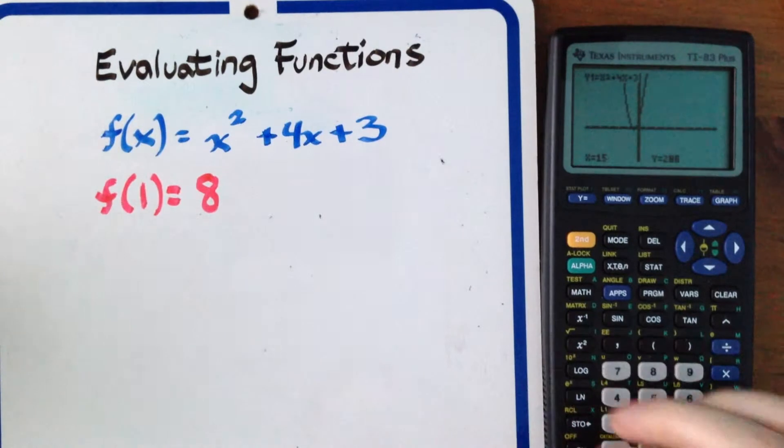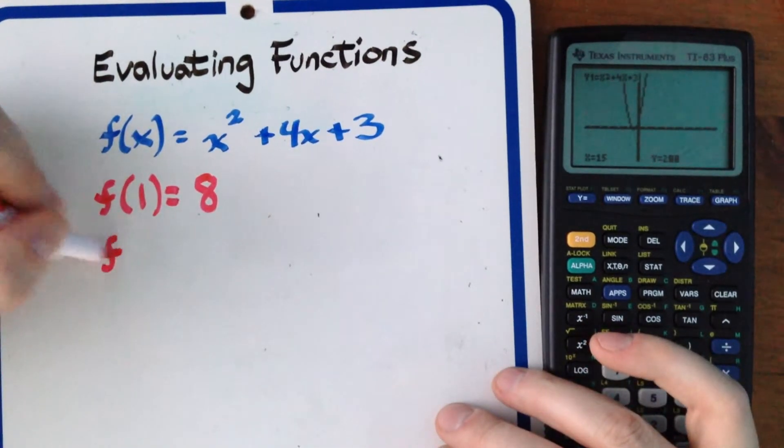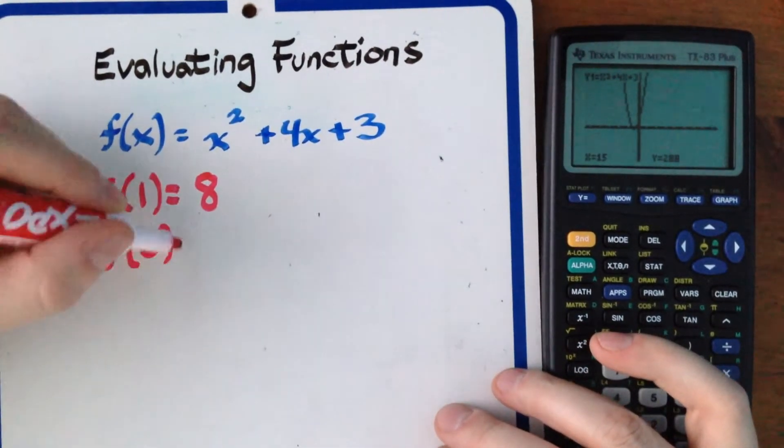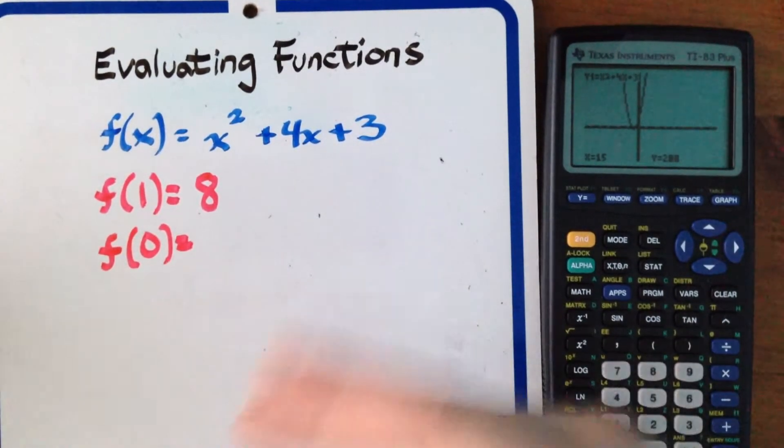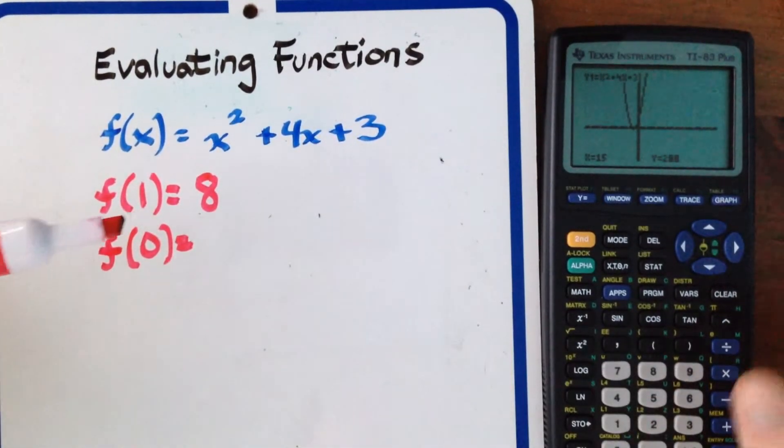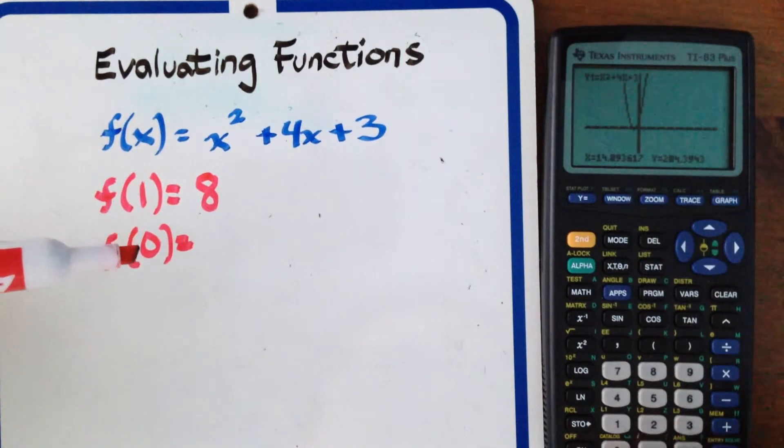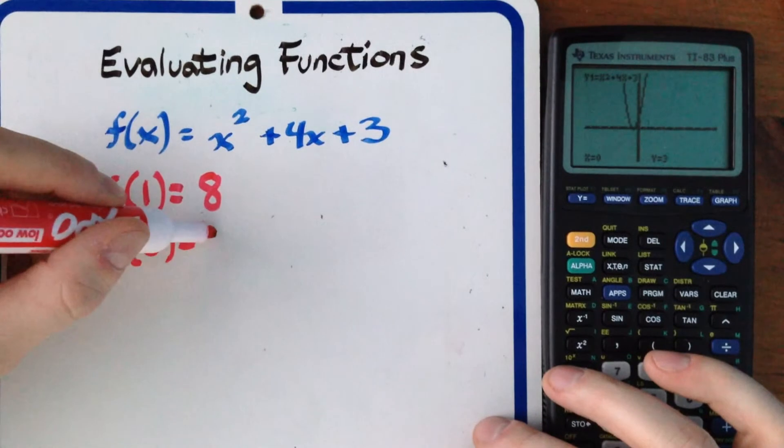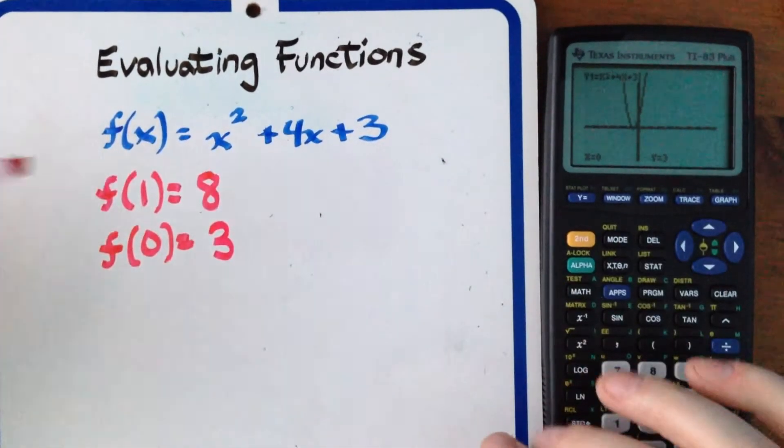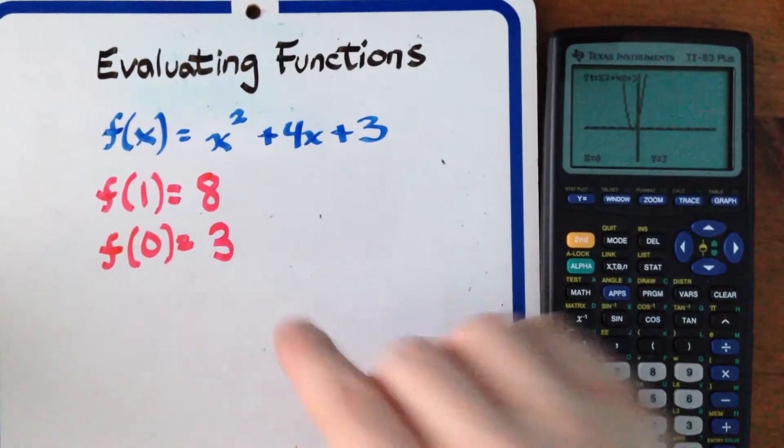Now this works for any value so say I wanted to find f(0) okay in this case f(0) would be the y-intercept so this actually is a great way of figuring out the y-intercept as well. So all you would have to do is hit 0 in for x and then it spits out the y-intercept of 3. Okay so then you know your y-intercept would be (0, 3).